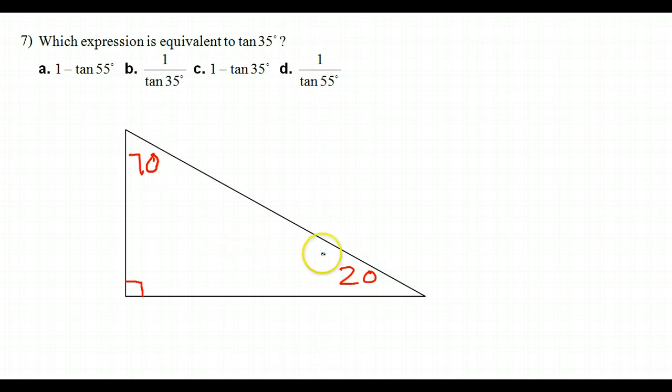You get it, these two angles always have to add up to 90. If I want to find this angle, I can just subtract the first angle from 90, and that's going to give it to me every single time.